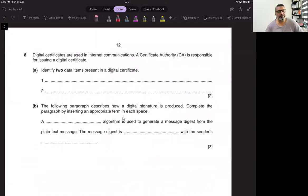Digital certificates are used in internet communication. A certificate authority is responsible for issuing a digital certificate. Identify two data items present in the digital certificate. We have just done it: hashing algorithm, digest message digest.